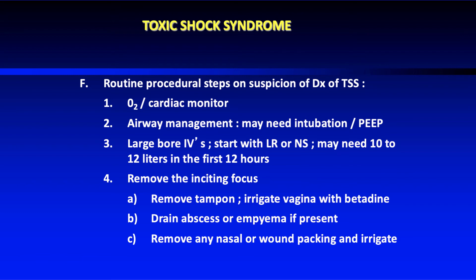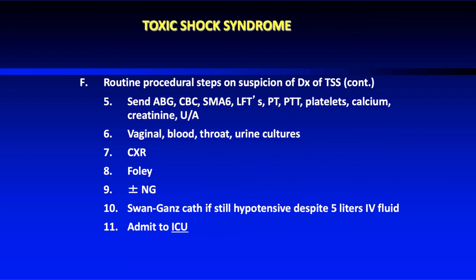For a suspected toxic shock syndrome patient, start with oxygen, monitoring, airway management, and large-bore IV access. Remove the inciting factor — tampons are a well-known cause, so remove the tampon and irrigate the vagina with betadine. Drain any abscess or empyema if present, and remove nasal or wound packing and irrigate.